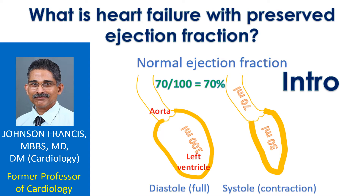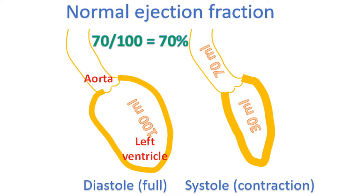Ejection fraction is the fraction of the blood ejected out from the filled heart. The lower chambers of the heart fill when they relax after a contraction. As an example, if the left ventricle — the lower left chamber — has 100 ml of blood after filling, and 70 ml is ejected out during the next contraction, the ejection fraction is 70%.